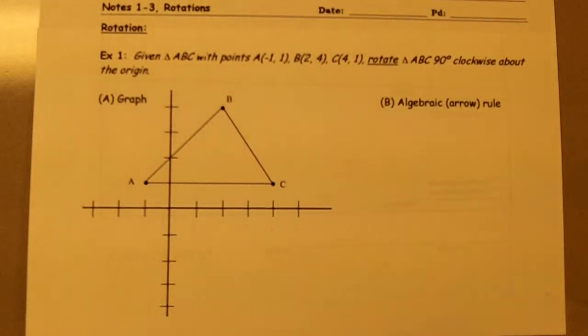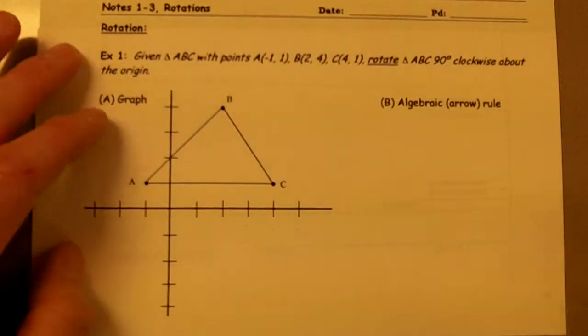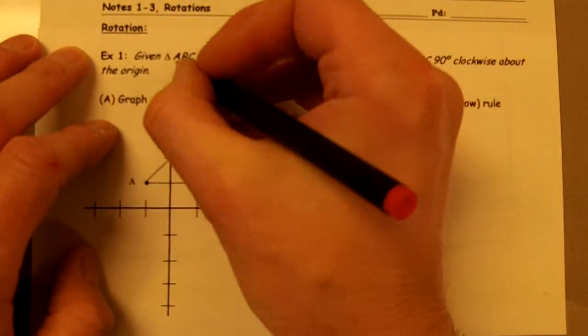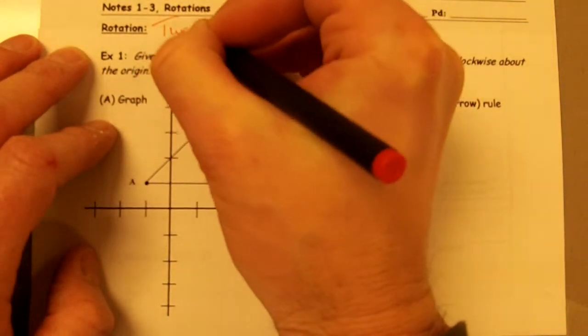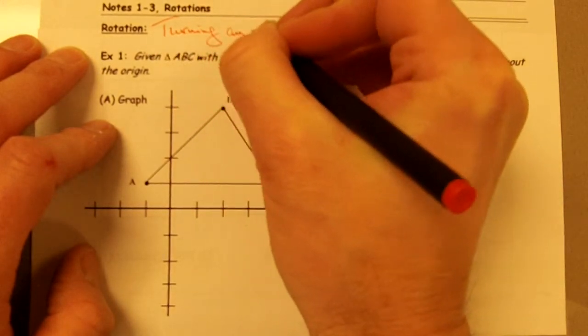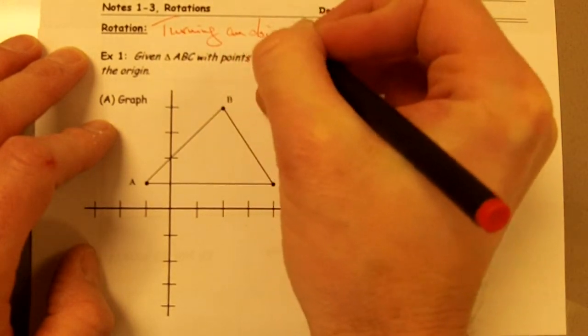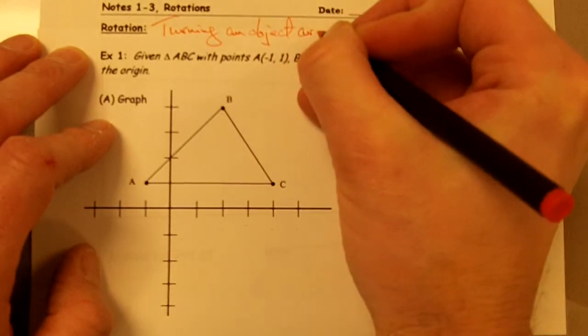Okay, in this video we're going to talk about the geometric transformation called a rotation. Rotation just means turning an object around a fixed point.